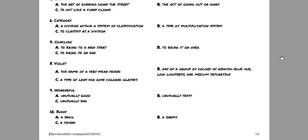The next one is eight. Eight is violet. Does violet mean the name of a very mean friend? Is it B, any of a group of colors of reddish-blue hue, low lightness, and medium saturation? Or is it C, a type of lens for rose-colored glasses?